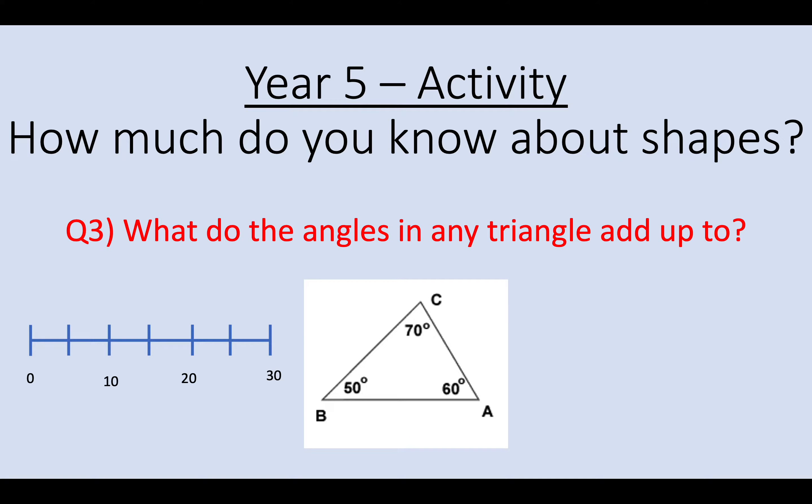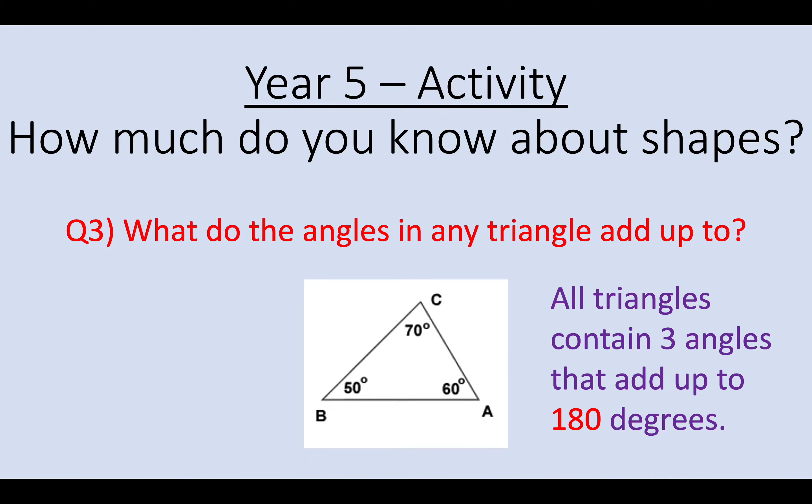Question 3. What do the angles in any triangle add up to? Okay so the 3 angles inside a triangle always add up to 180 degrees. And in the question shown we had a 50, 60 and 70 degree angle in the triangle which gives us 180.